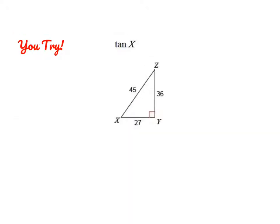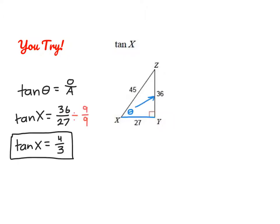Last problem — go ahead and pause to give it a try. The ratio for tangent is opposite over adjacent. For angle X, the opposite leg has a length of 36 and the adjacent leg has a length of 27. So the ratio is 36 over 27, which simplifies to 4 over 3. That is all for today — thank you for watching, bye-bye.